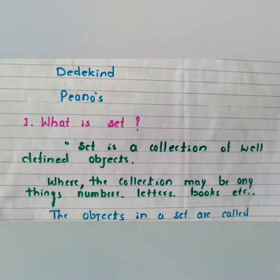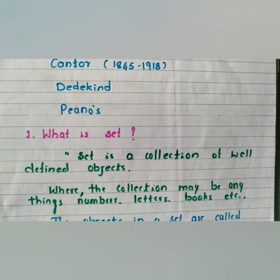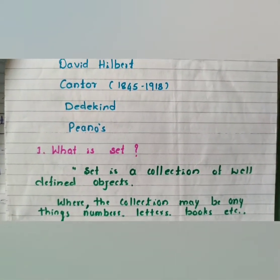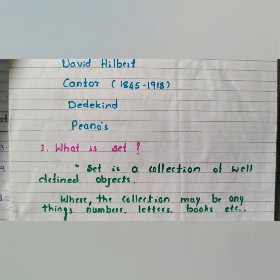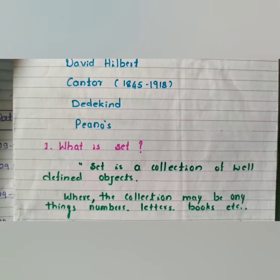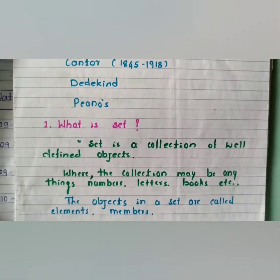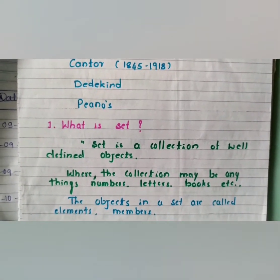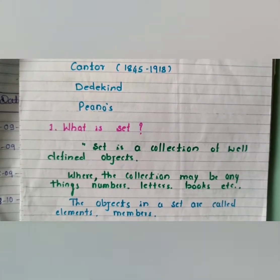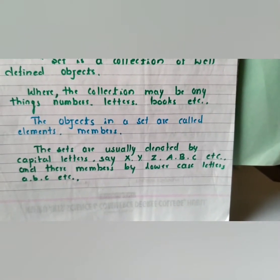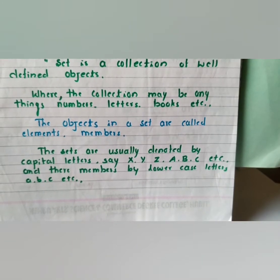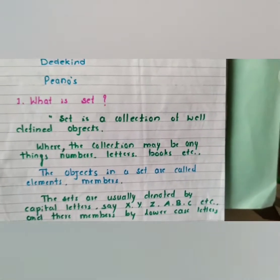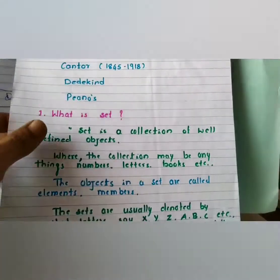Now, what is the definition of a set? A set is a collection of well-defined objects. The collection may be anything — numbers, letters, books, etc. The objects in a set are called the elements or members of a set. Sets are usually denoted by capital letters such as A, B, X, Y, Z, and their members by lowercase letters or numbers.